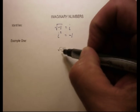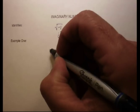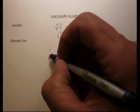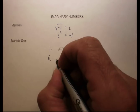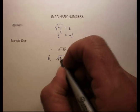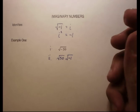So how do we simplify something like the square root of negative 50, then? Well, the first step is usually to factor out the square root of negative 1. So I'm going to change this to the square root of 50 times the square root of negative 1.